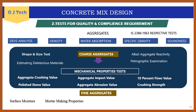Fine aggregate-specific tests include surface moisture, mortar-making properties, bulking of sand, fineness modulus, and silt content. Silt content has a limit — if too many fines pass through the 75-micron sieve, the fine aggregate is disqualified. Silt content and fineness modulus must both be tested.